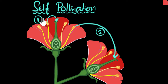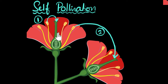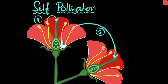For the first case to happen, the flower needs to be bisexual, meaning it has to have both the male and the female reproductive parts. On the other hand, if the flowers are unisexual, they can still self-pollinate — a male flower can transfer pollen grains to a female flower belonging to the same plant.